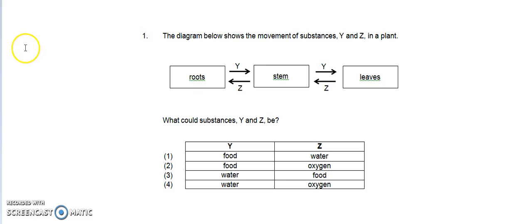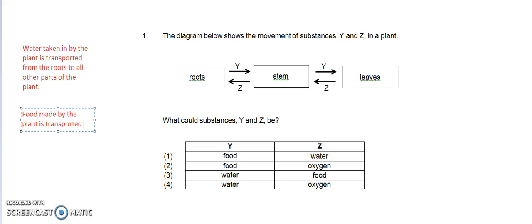Now let us ask ourselves what have we learned in this topic. We have learned that water taken in by the plant is transported from the roots to all other parts of the plant. We have also learned that food made by the plant is transported from the leaves to all other parts of the plant.